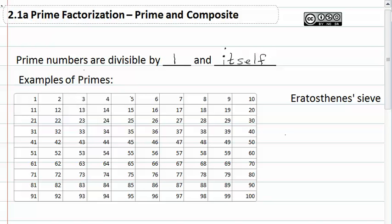So if I took all the multiples of 2, that would be all of these, all of these, all of these, and all of these.